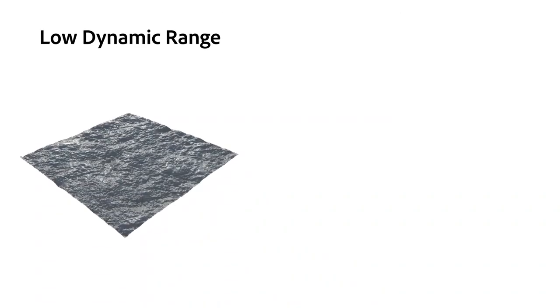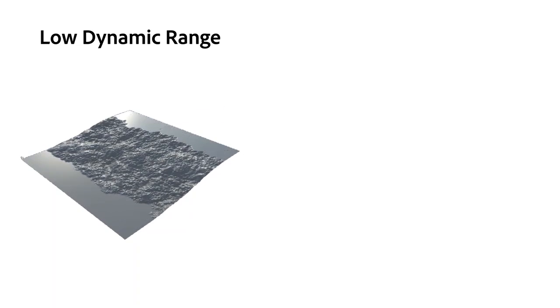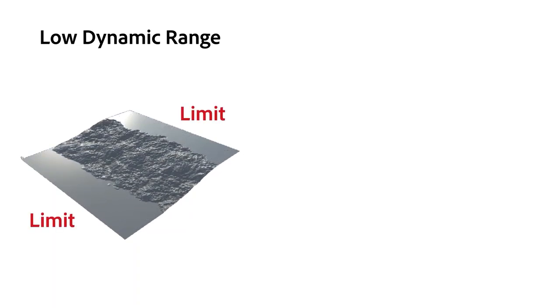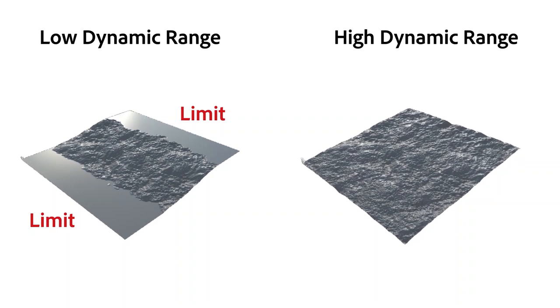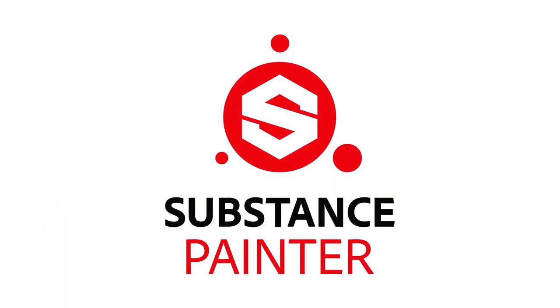You should remember that low dynamic range issues with add and subtract, where you hit max and minimum limits, can easily be fixed by using high dynamic range. In Substance Painter, height maps always use high dynamic range by default, so you won't have any problems there.